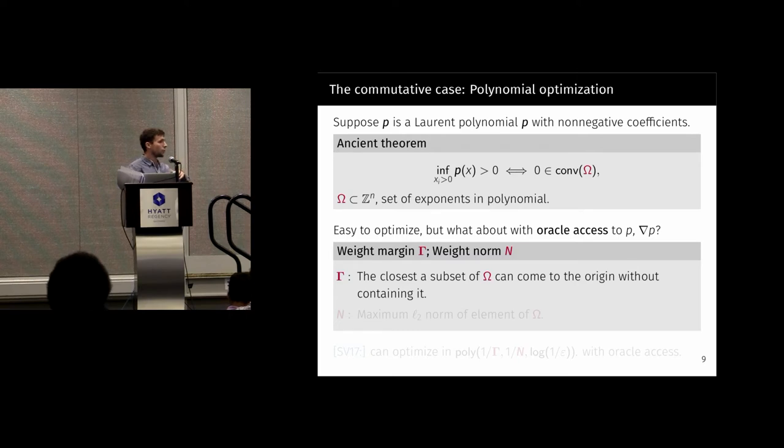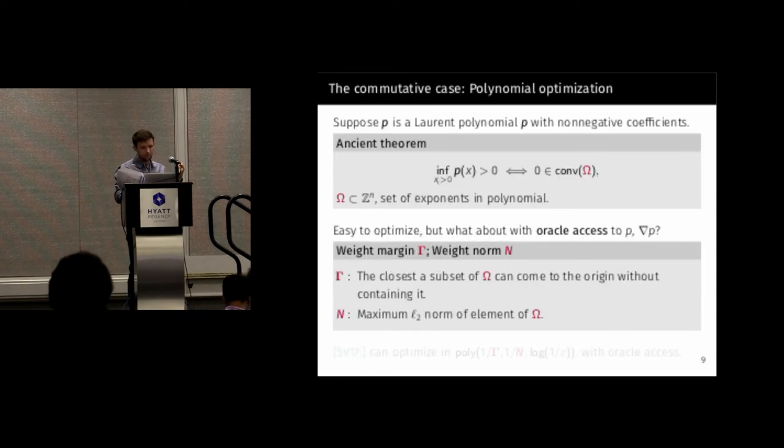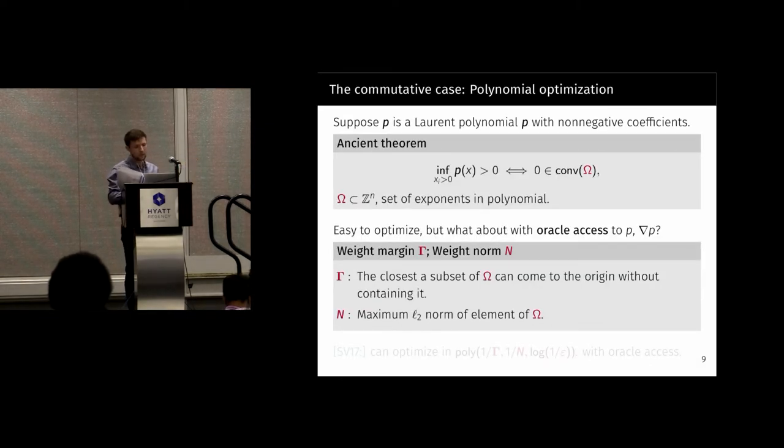What controls the complexity with oracle access are these quantities. One is the weight margin and one is the weight norm. This quantity gamma is the closest that a convex hull of any subset of the exponents can come to the origin without containing it. So you imagine all of these vectors in Z to the n and they have a bunch of convex hulls and how close those convex hulls can be to the origin without containing it. That's the weight margin. And then the weight norm is just how big is it?